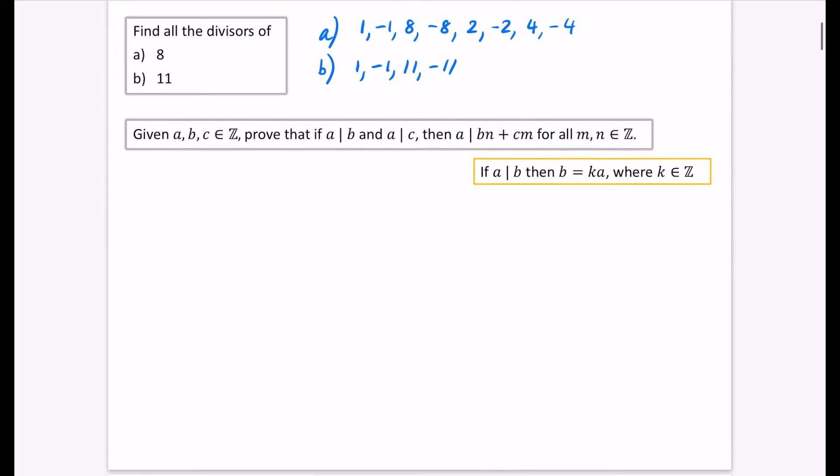And then sometimes you might be asked to do things with a little bit more kind of formal language that comes with this. So it says here, given that a, b, and c, this symbol means is a member of, and the Z, if you've not seen it before, means the integers. So it's telling us here, a, b, and c are members of the integers. And we're going to prove that if a divides b, and if a divides c, then a divides bn + cm for all m and n, which are integers. Now that kind of sounds like a bit intense of what's going on here.